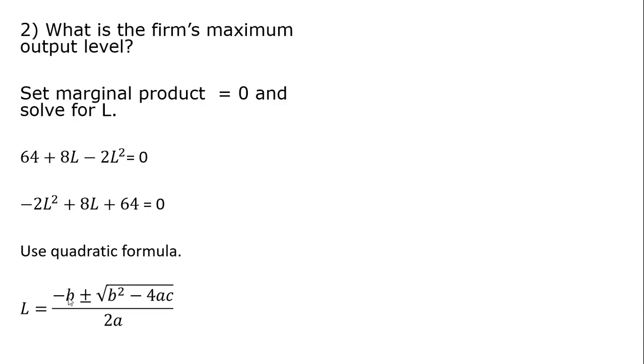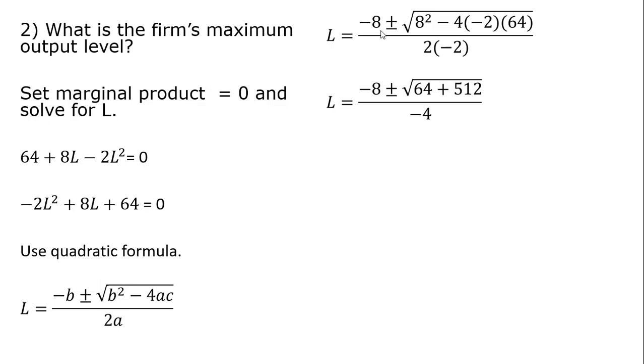So a few things about this. B here is going to be this middle term here. It's going to be 8. B squared will just be 8 squared. And then it's minus 4AC. A is going to be minus 2. And C is the constant. So that's going to be 64. That's one way to remember it too. C is the constant. So C will be 64. And then in the denominator here, it's going to be 2 times A. And again, remember A here is minus 2.